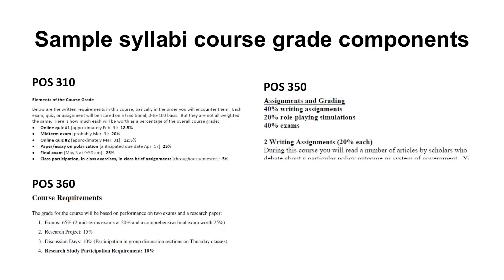Other important information that your syllabi tend to list are course grade components. Each instructor lists things out differently, and different assignments are worth different amounts in different classes. In POS 310, there's a midterm and a final worth 45% of your grade. In POS 350, there are exams worth 40% of your grade. And in POS 360, there are three exams worth 65% of your grade. It's important to read this to know how much each type of assignment or exam is worth to that specific course's overall grade.